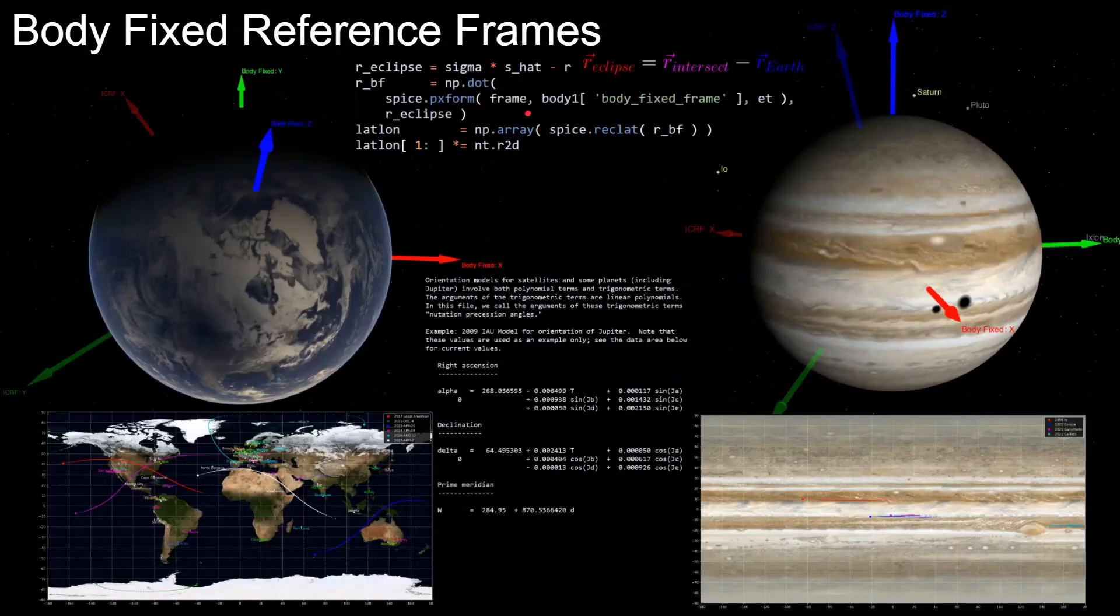Now that we know sigma, we can plug it in to calculate the eclipse vector, but this vector is in the EME 2000 inertial frame, but in order to calculate the latitude and longitude coordinates, we need to convert it to an earth centered earth fixed frame, which in this case will use IAU earth.